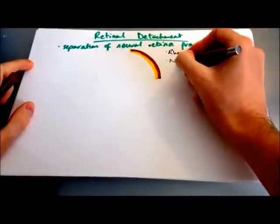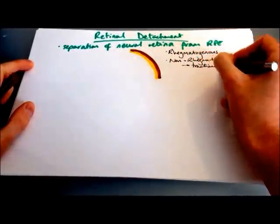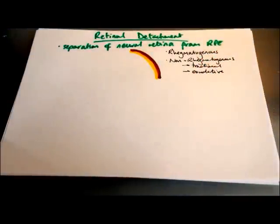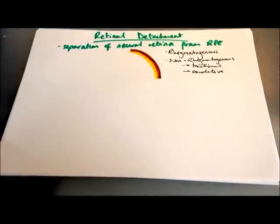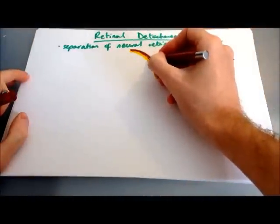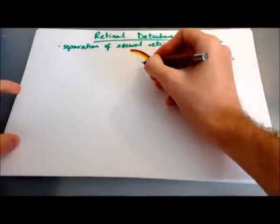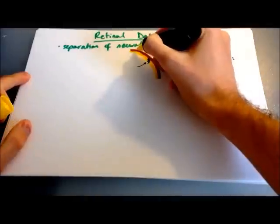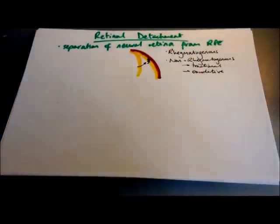There are two main types: rhegmatogenous and non-rhegmatogenous. Non-rhegmatogenous can be divided further into tractional and exudative. In rhegmatogenous, there's a break in the retina, either from breaches, traction or chronic atrophy, and this allows fluid to seep into the potential space between the neural retina and the retinal pigment epithelium, causing the retina to be lifted away.